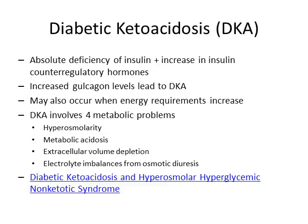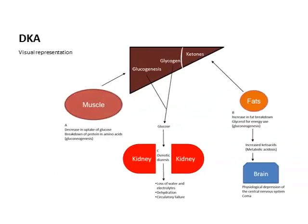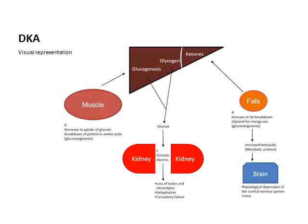This visual slide shows what happens with DKA: decreased uptake of glucose leads to gluconeogenesis, higher glucose levels, and osmotic diuresis — sugar draws water out, causing volume depletion and circulation problems.